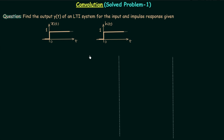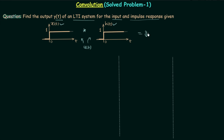Having understood convolution and solved questions, it's time to practice some problems. In our first problem, we need to find the output y(t) of an LTI system for the given input and impulse response. The two waveforms shown are identical — both are unit step signals — and we need to find the output by performing convolution between x(t) and h(t). I will explain three different ways to find the output y(t).